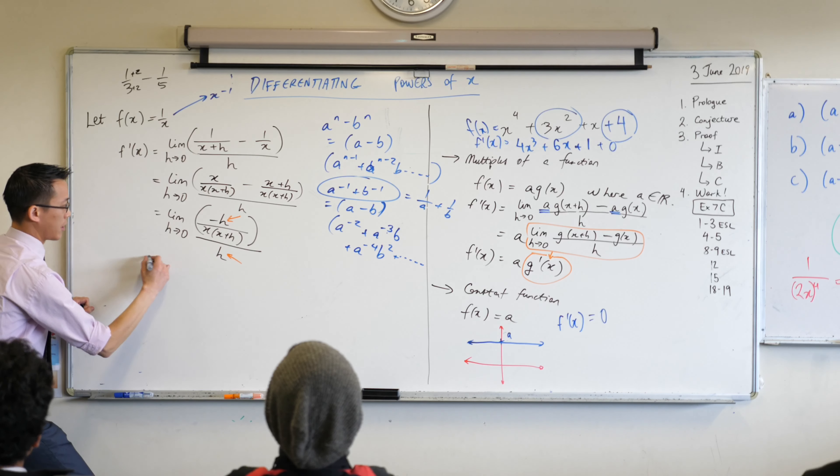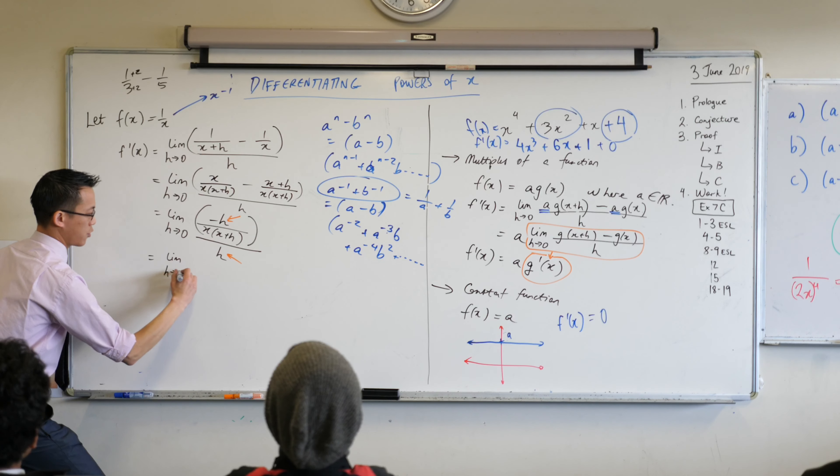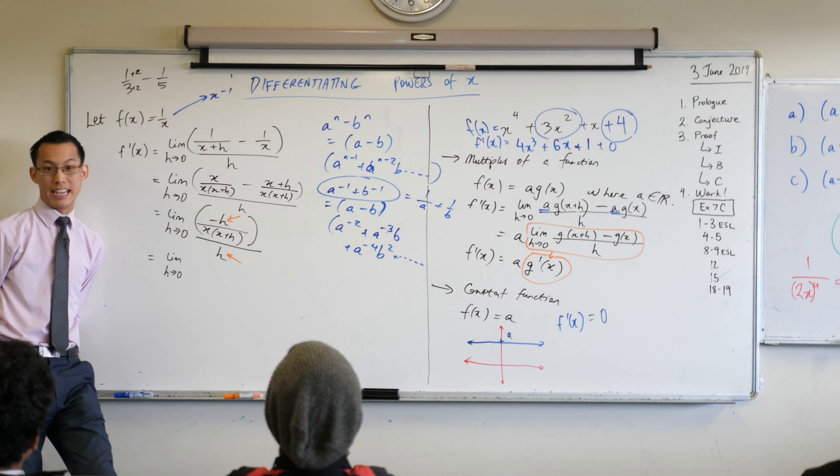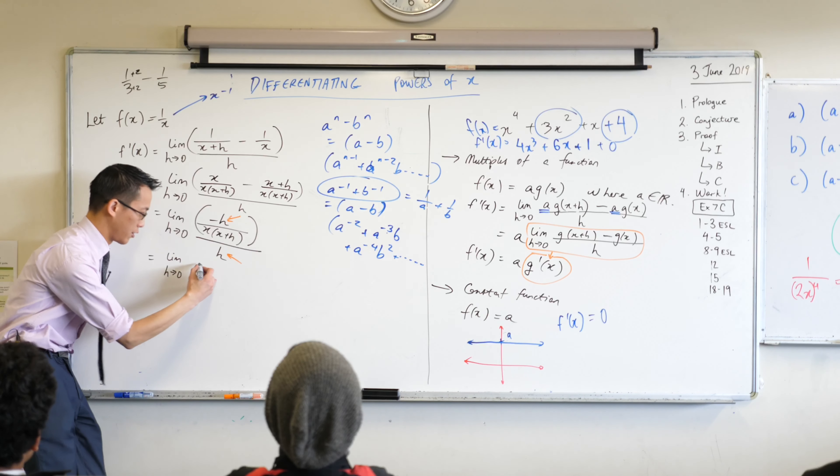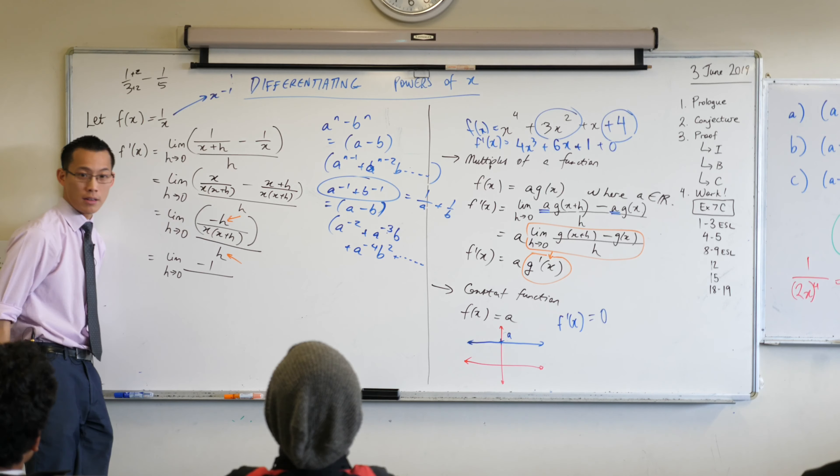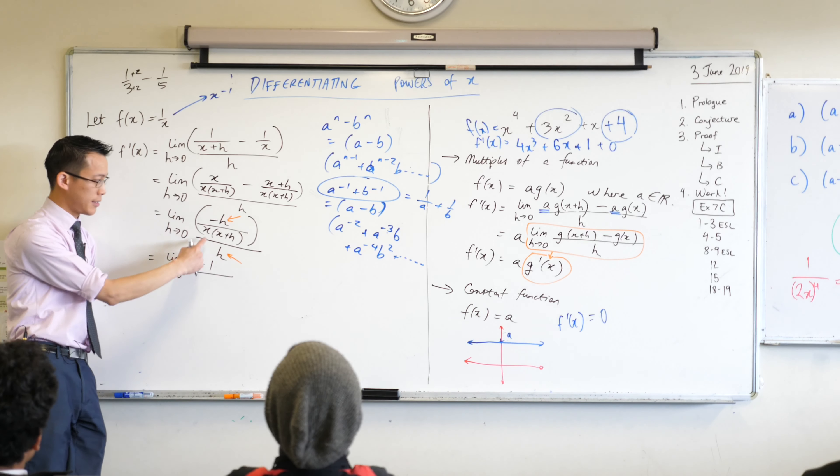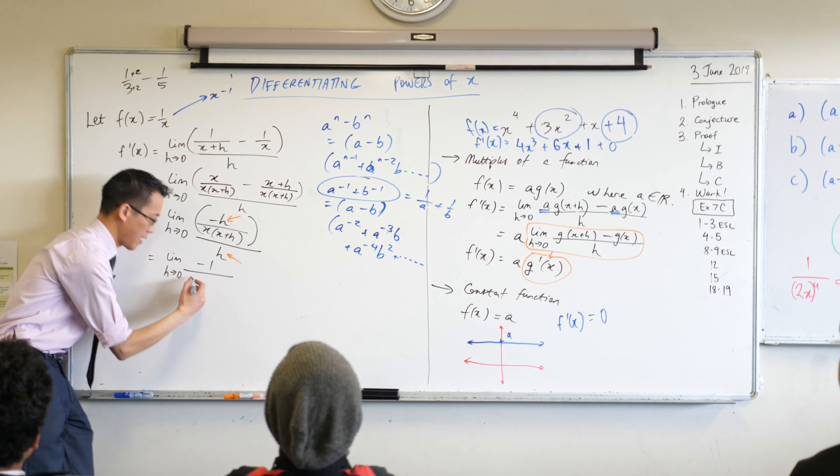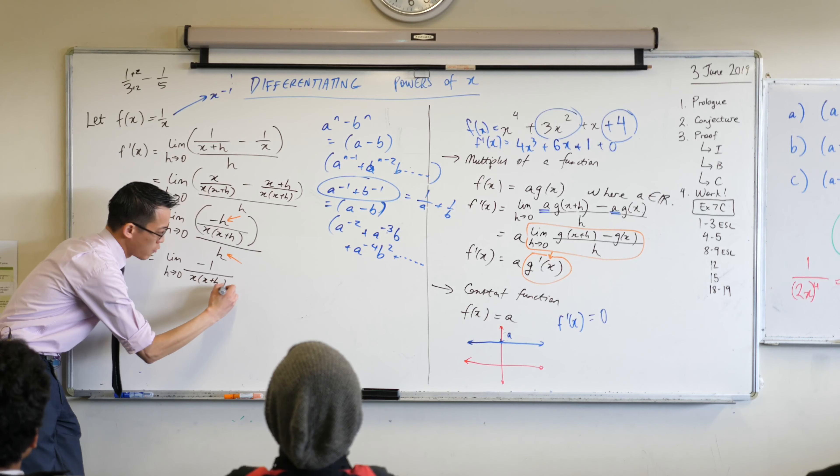All right, let's see what we got here. So limit h approaches zero. If you cancel your h what does your numerator now become? Minus one, very good. That sign doesn't disappear. And then our denominator, it's this x times x plus h business.